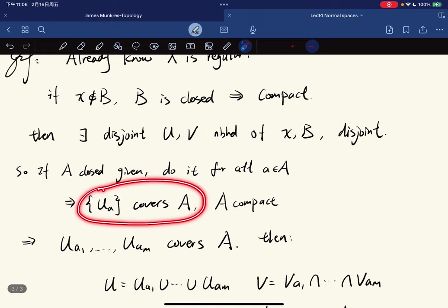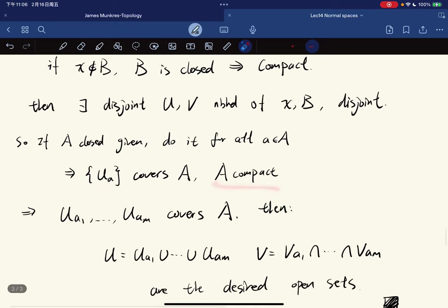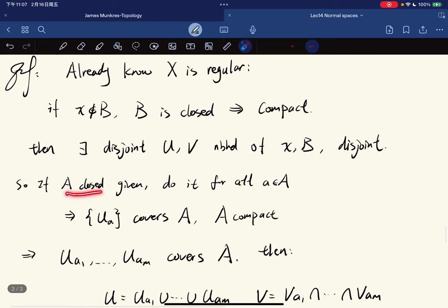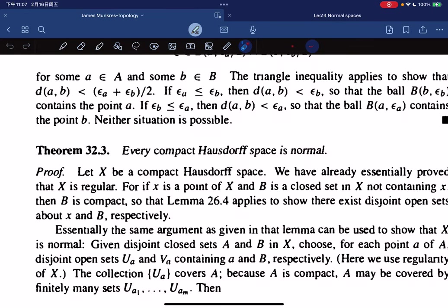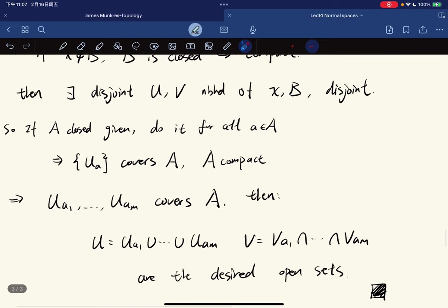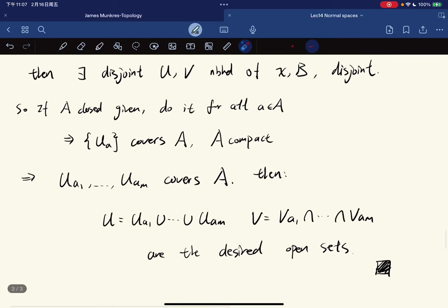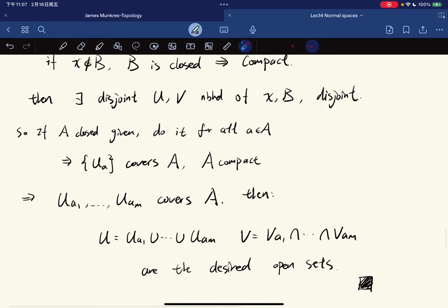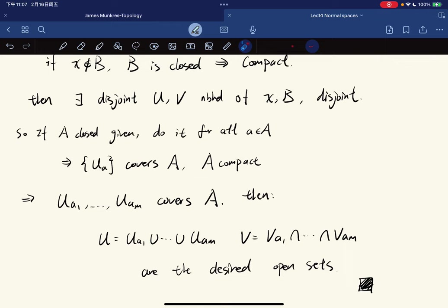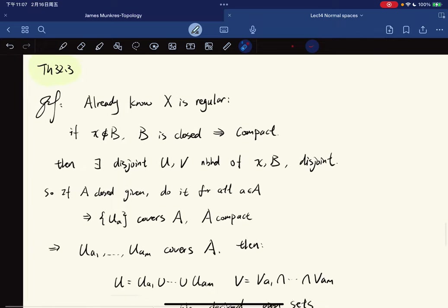So we get an open cover of A. We use the fact that A is compact because it's a closed subset of X, which is compact. So we get a finite subcover. Then we let U be these sets and V be these sets. And they are the desired open sets. Because each U covers A, and each of the V's contain B. So does the intersection. So we're done. Okay.